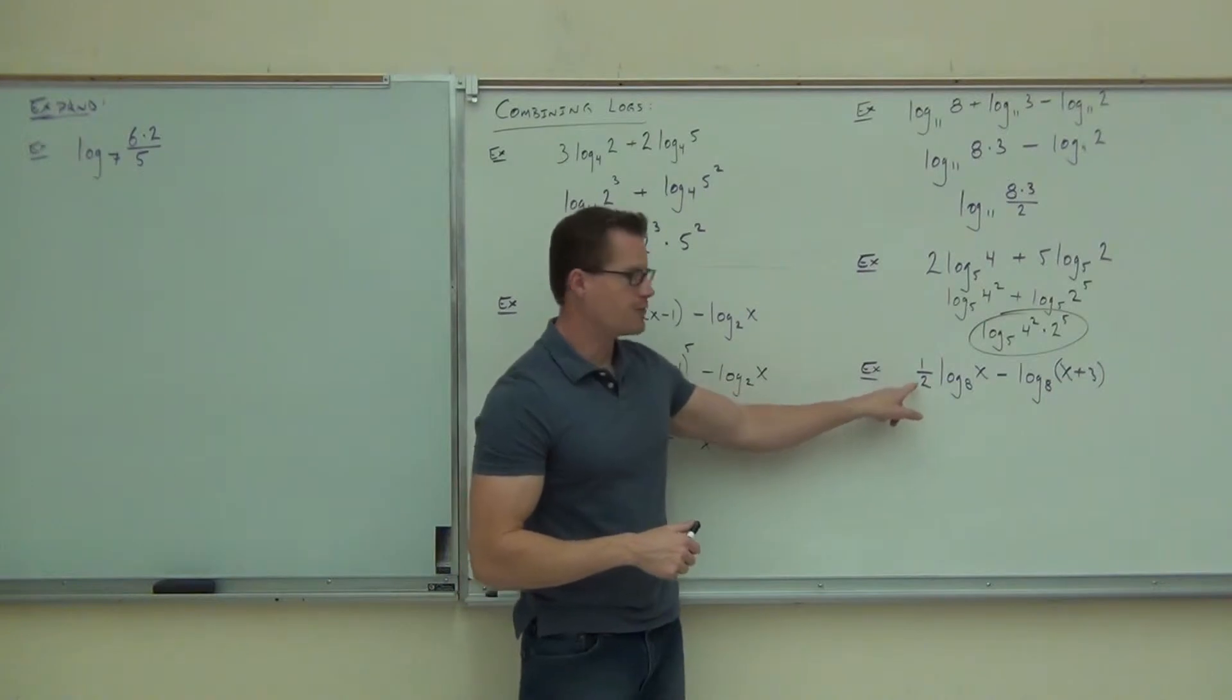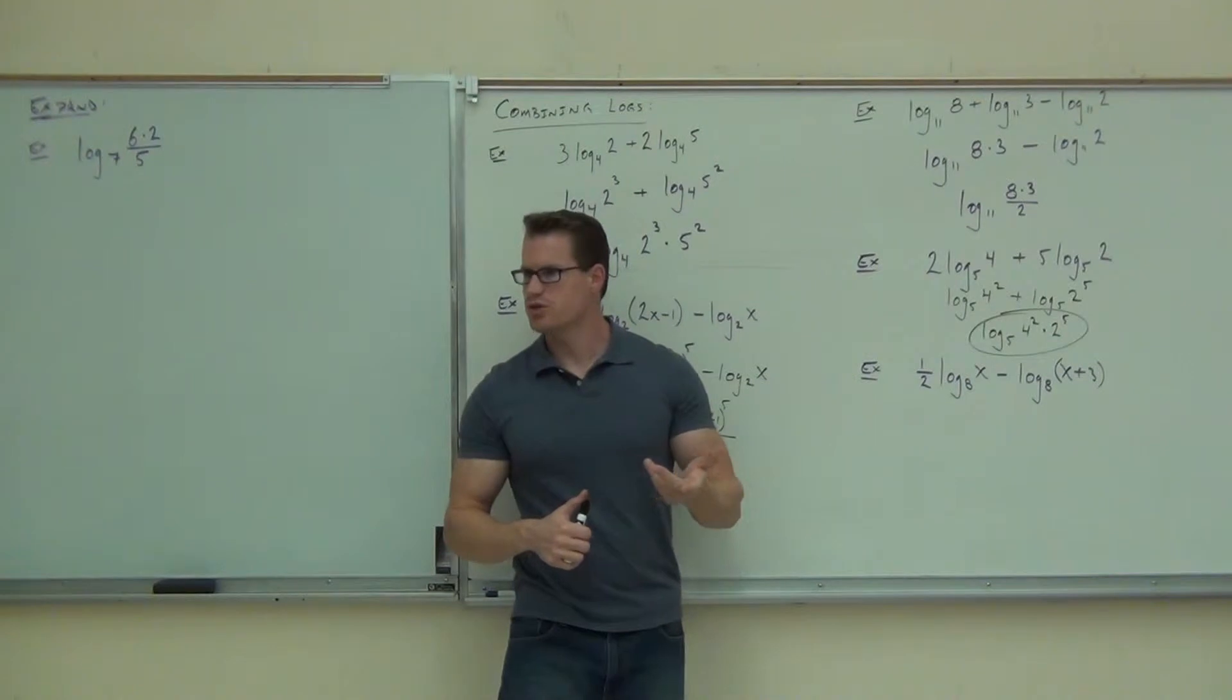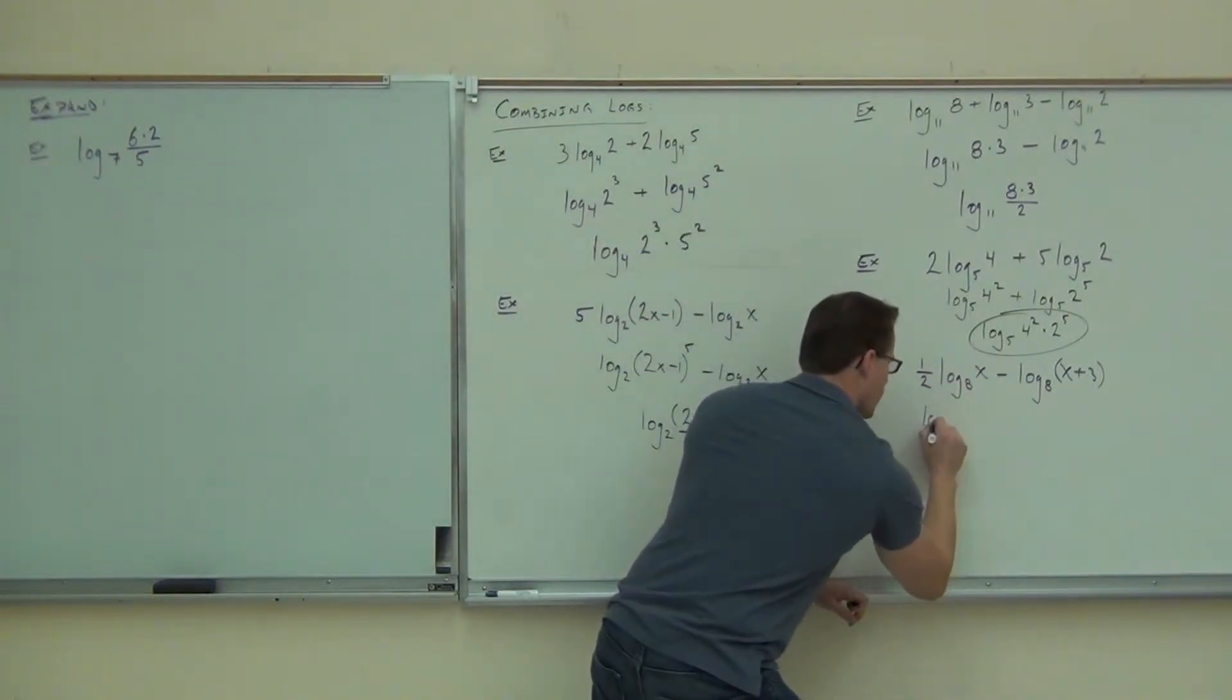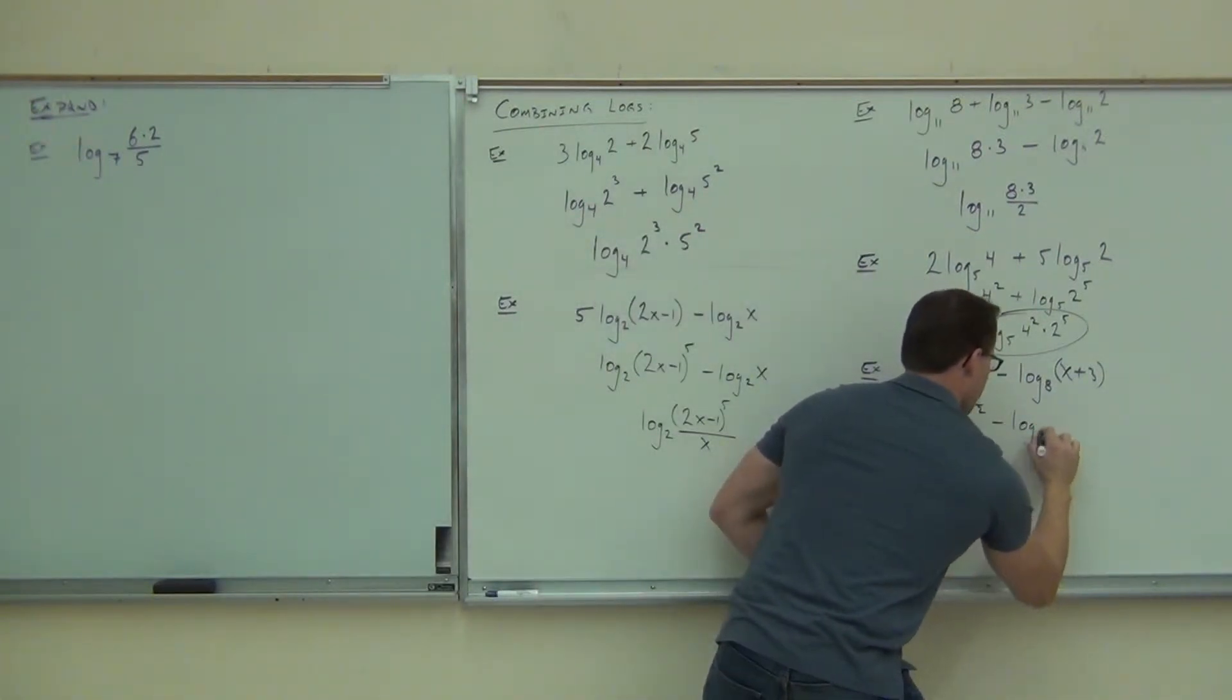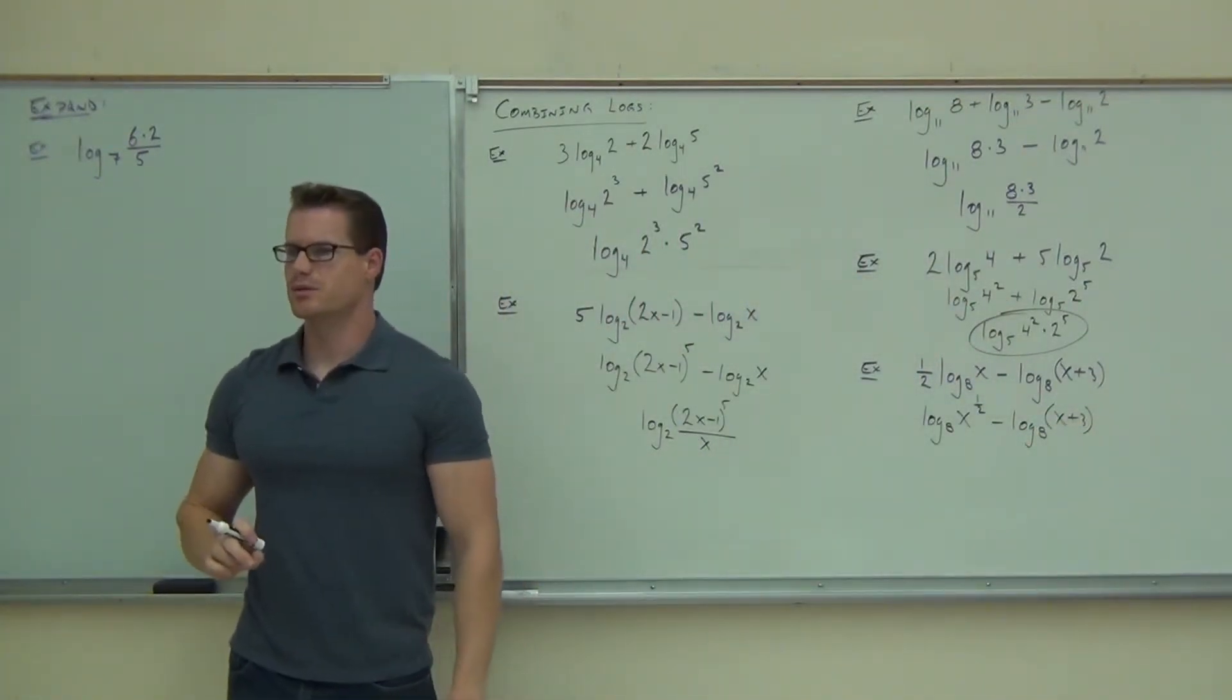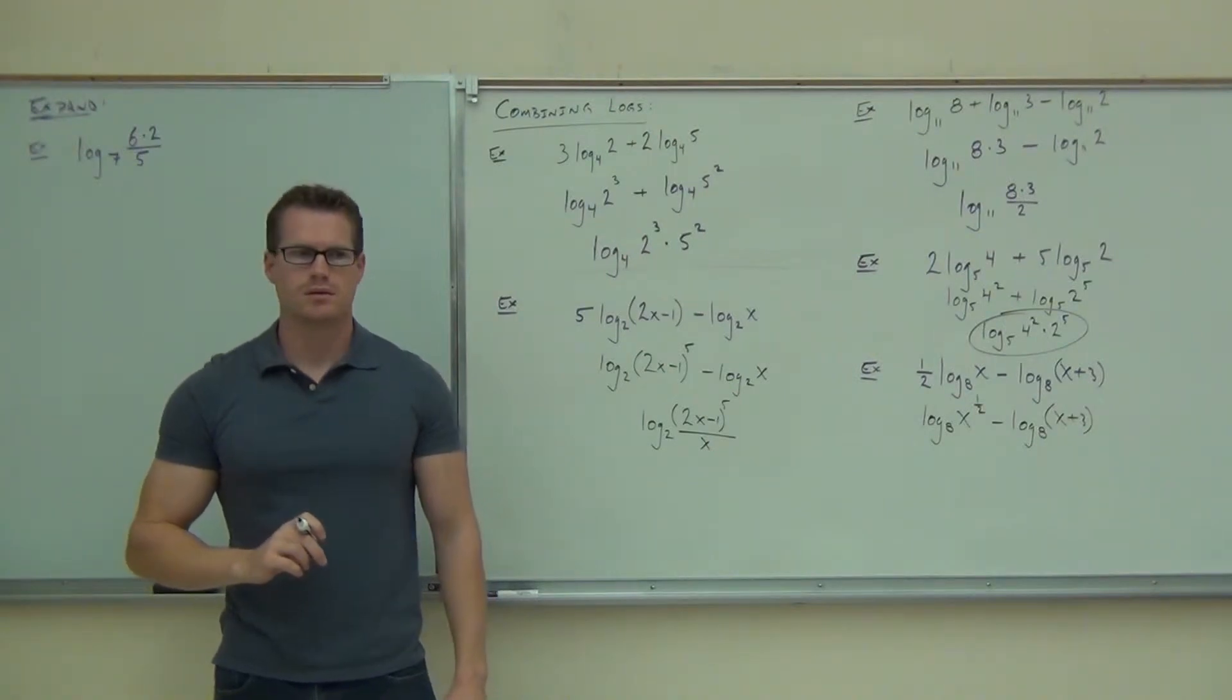What about the 1 half? Is that still an exponent? Square root. Yeah, that's actually a square root. You could change it to a square root if you wanted to. You see, when you move that as your exponent, you'll have log base 8 of x to the 1 half. Those fractions can still move up as exponents. Is there anything else we can do on that?